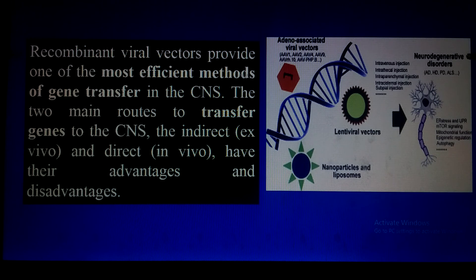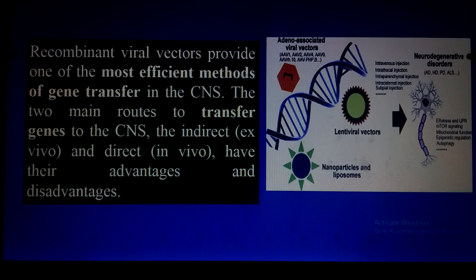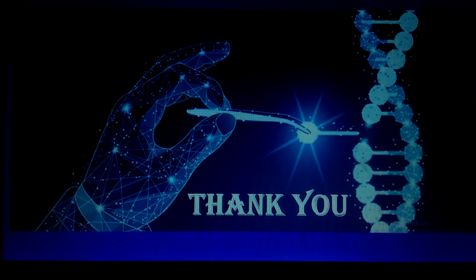Neurological disorders are also treated by gene therapy. Recombinant viral vectors provide one of the most effective methods of gene transfer into the central nervous system. The two main routes to transfer genes to the central nervous system — ex vivo and the direct in vivo — each have their advantages and disadvantages. This is all about the principle and application of gene therapy.